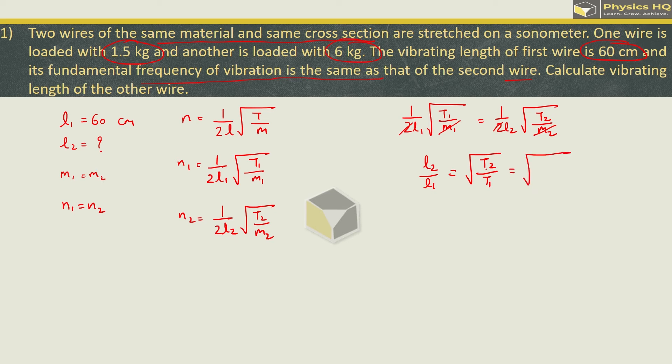So we will have 1 by 2L1 root of T1 by M1, this is equal to 1 upon 2L2 root of T2 by M2. We can cancel out this 2 and since mass per unit length are equal we can cancel out small m as well. So what we are left with is L2 upon L1 equals root of T2 upon T1. Now what are these tensions? Tension is because of these masses which are attached. For the second string the tension will be 6 kg into G. For T1 it will be 1.5 into G. We can cancel G, and this equals root of 4 or equal to 2. So we got L2 equal to 2 times L1 which is 2 into 60 cm giving us 120 cm.